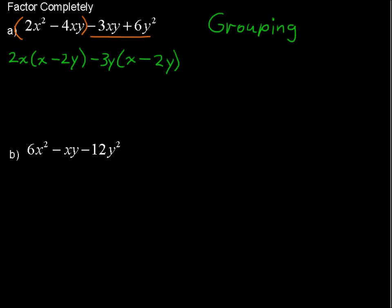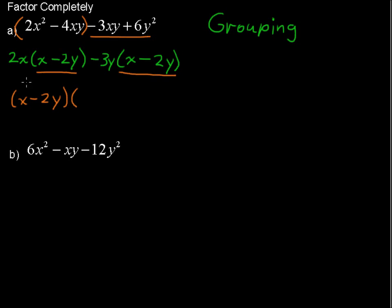And lo and behold, these are common factors now. We've got x minus 2y as a common factor across both groups — this x minus 2y can be pulled out. It's being multiplied by 2x from the first group and by negative 3y from the second group, so we can see this factoring as the reverse of distribution.